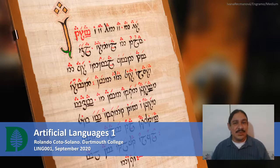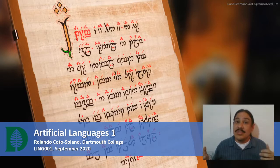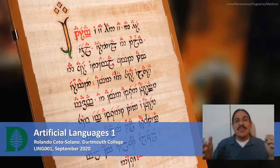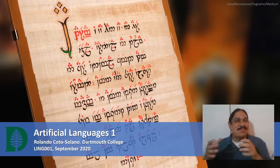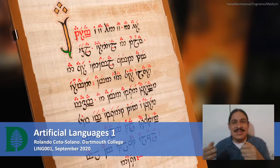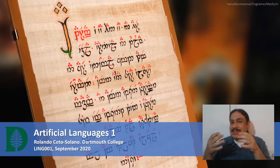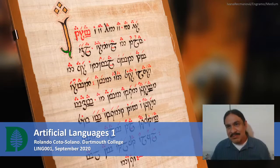One of our tasks this quarter is going to be to design an artificial language. We're going to study linguistics in two ways: by looking at patterns in natural languages, and by reverse engineering those patterns as you design an artificial language of your own.